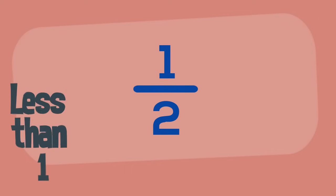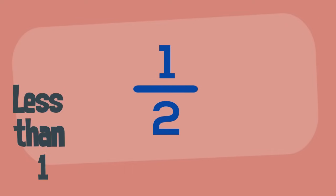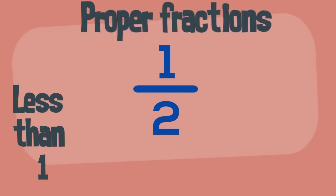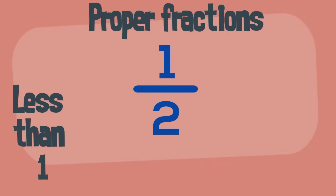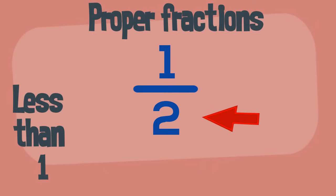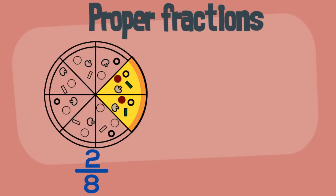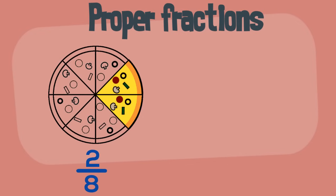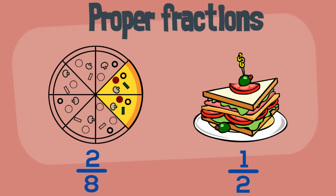Fractions are usually less than one whole. These are called proper fractions. The numerator is smaller than the denominator. For example, two-eighths of a pizza or half of a sandwich.